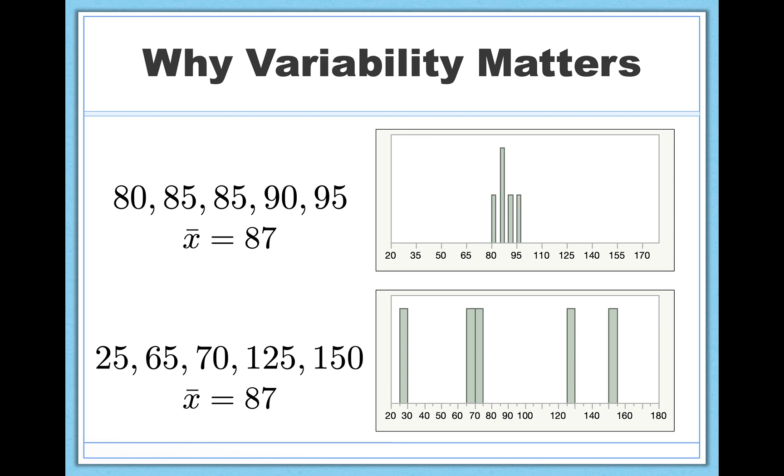If I were to plot it out, for example, you would see this difference clearly. In the top data set, all the scores are very clustered together. Everything is close, but in the bottom data set, scores are very spread out. So again, I need some way to quantify these differences, and a measure of central tendency like the mean simply can't capture that alone.